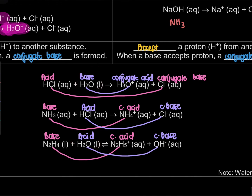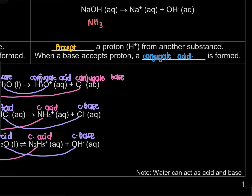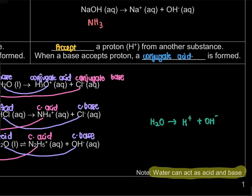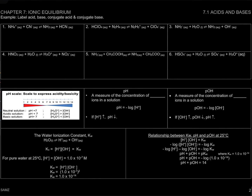Notice that in the first equation H₂O acts as a base, but in the second equation H₂O acts as an acid. That's why the notes mention that water can act as both acid and base — it is amphoteric. From the Arrhenius theory, H₂O can dissociate to produce H⁺ ions (acting as acid) or produce OH⁻ ions (acting as base).